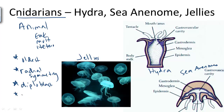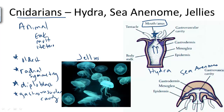And finally, these Cnidarians have a gastrovascular cavity. This means that they have a single opening that serves as both the mouth and the anus in the same place.